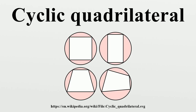Moreover, in any convex quadrilateral, the two diagonals together partition the quadrilateral into four triangles. In a cyclic quadrilateral, opposite pairs of these four triangles are similar to each other. If M and N are the midpoints of the diagonals AC and BD, then a relationship holds where E and F are the intersection points of the extensions of opposite sides. A set of sides that can form a cyclic quadrilateral can be arranged in any of three distinct sequences, each forming a cyclic quadrilateral of the same area in the same circumcircle, and any two of these cyclic quadrilaterals have one diagonal length in common.